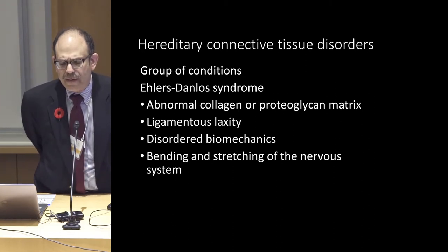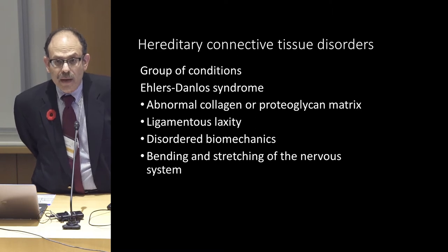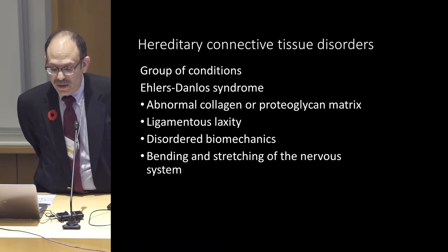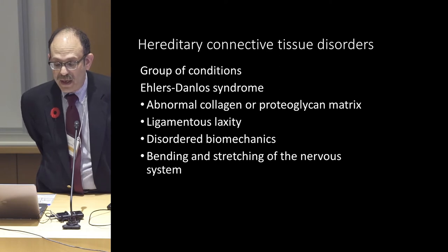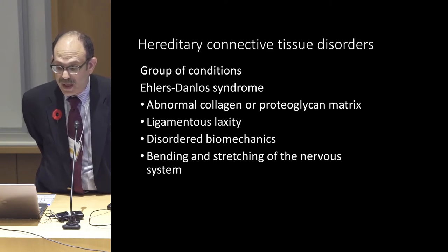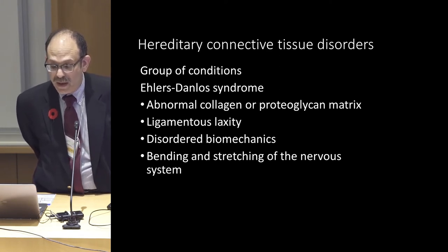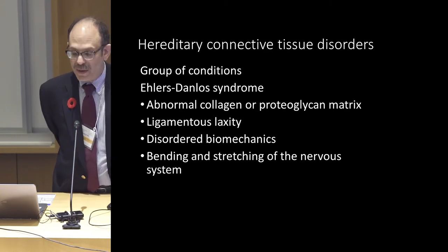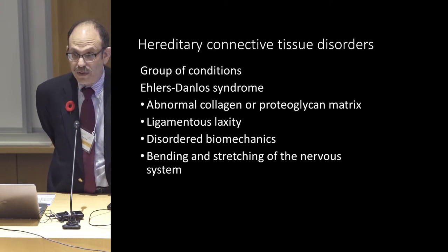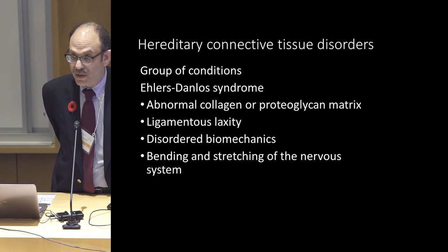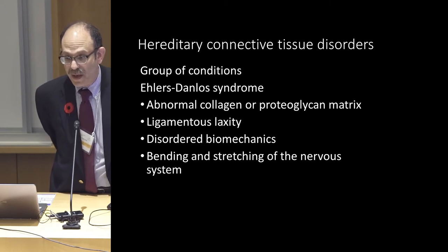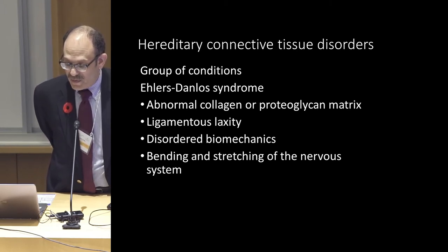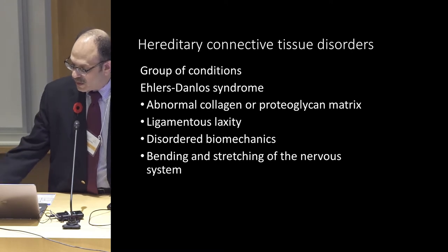I'm presenting findings for a group of conditions that have varying presentations and varying severity, but it all boils down to abnormal connective tissue, whether it's from the abnormal collagen or polyglycan matrix. The issue comes to ligamentous laxity, which leads to instability of the bones and muscles with disordered mechanics, resulting in stretching, bending, and pulling of the nervous system — primarily the brainstem and spinal cord — with devastating results frequently.